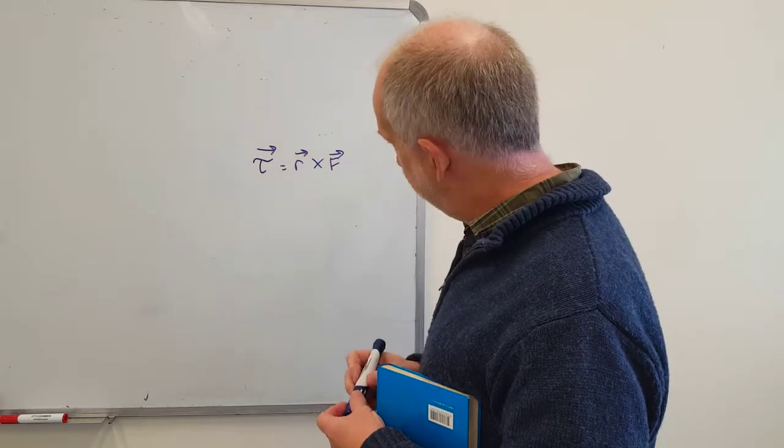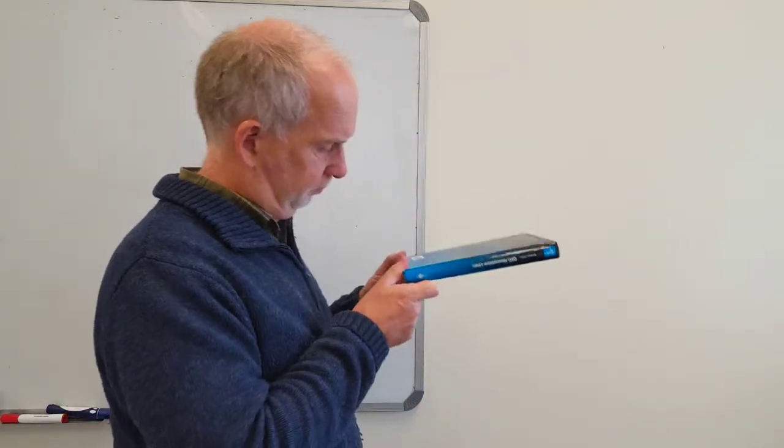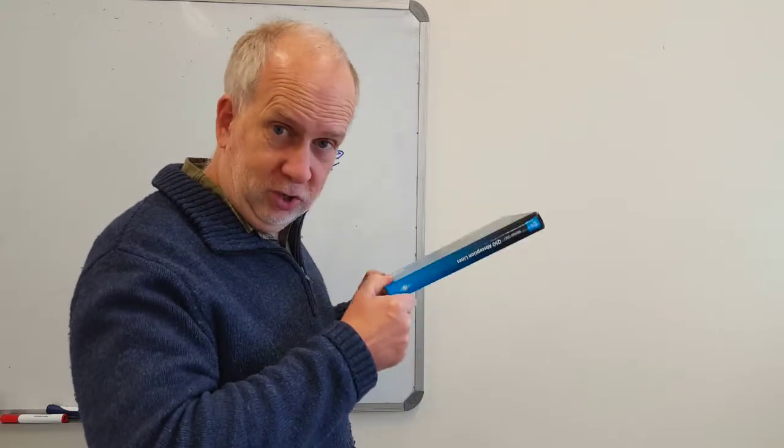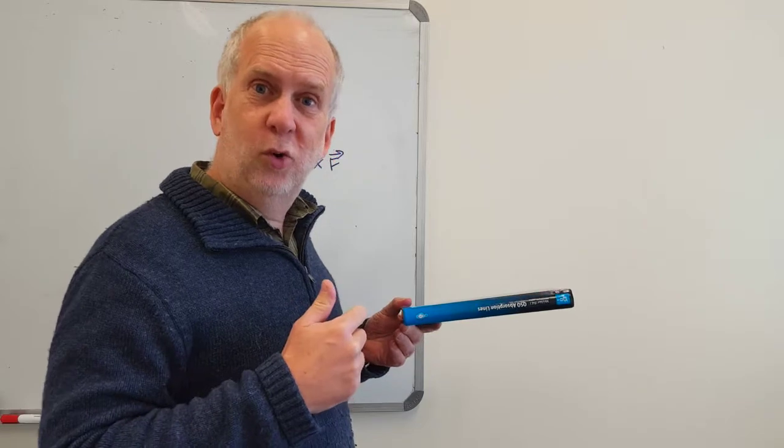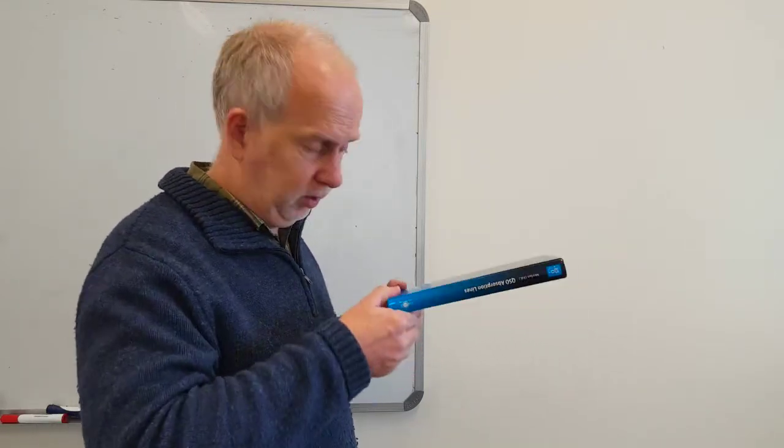Now what does that mean? Let's imagine I'm trying to work out the torque of this book. I'm holding it here and its weight is trying to turn it so there's a torque. So first thing to do is work out where is your hinge, where is the axis. In this case the hinge is going to be along here because that's where I'm holding it.